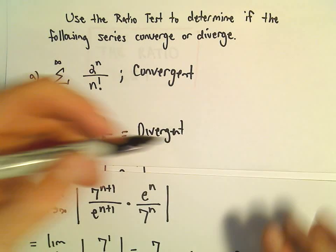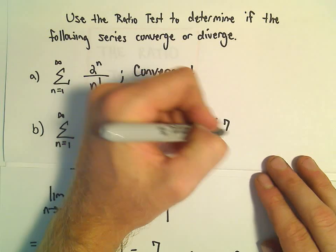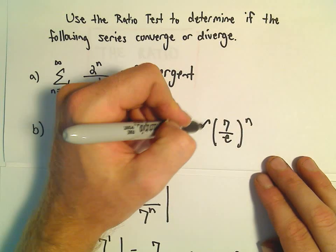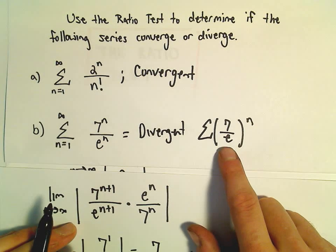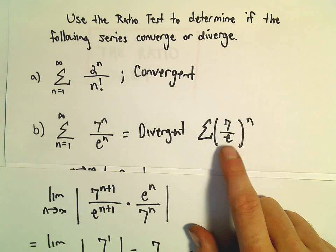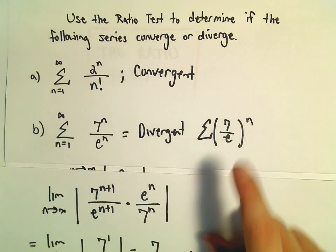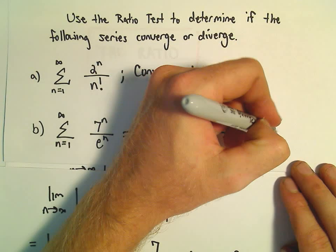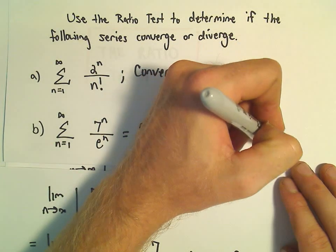And again, you could have recognized this as being a geometric series, 7 over e raised to the n. The r value for it to be convergent has to be between negative 1 and 1. 7 over e definitely doesn't fit that. So this would be an example of a divergent geometric series.